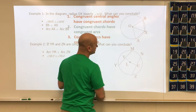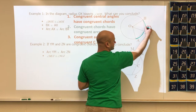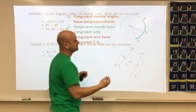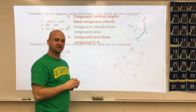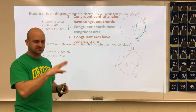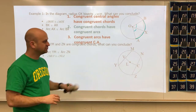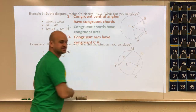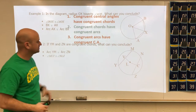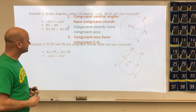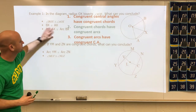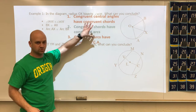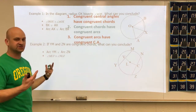If we know that this arc is congruent to that arc — and we've talked about arc measures in degrees — then we know this angle has to equal that angle. There are three pieces of information to help you solve problems, so make sure you copy them down. The symbols represent these three relationships, and putting them into words makes them easier to understand.